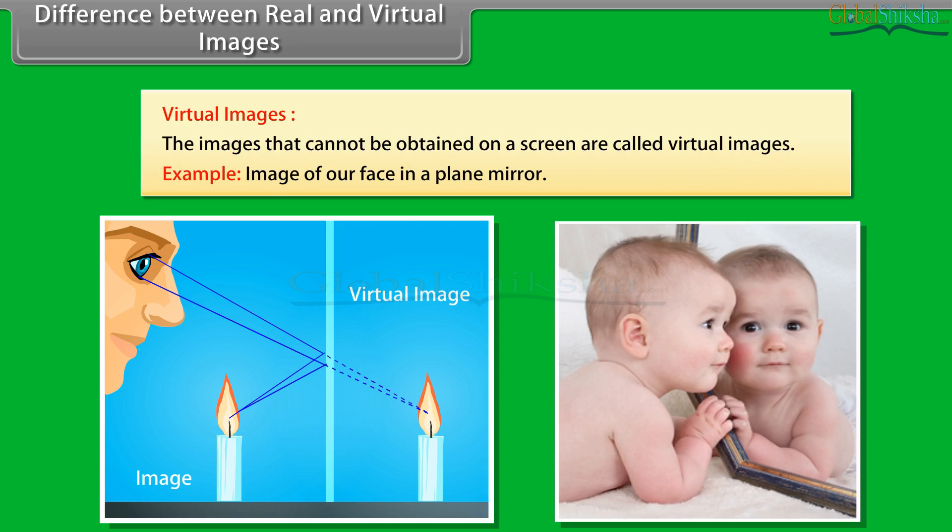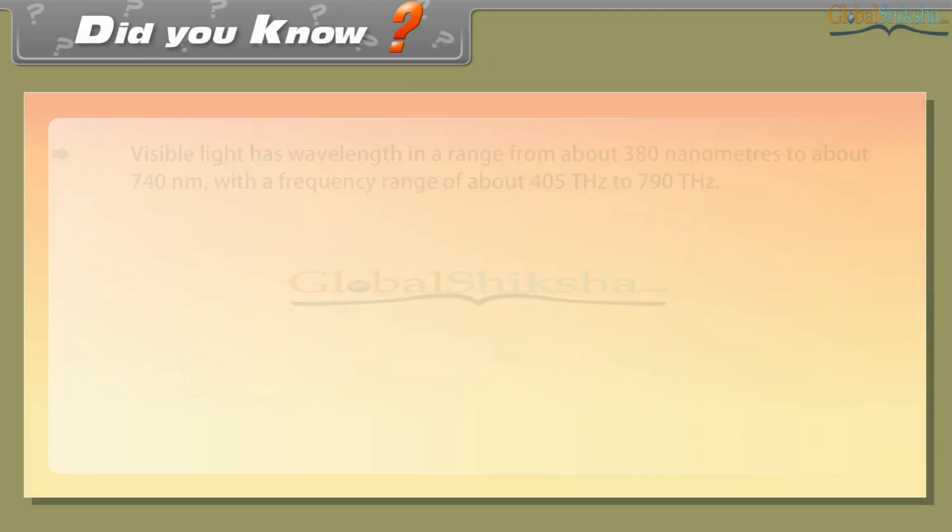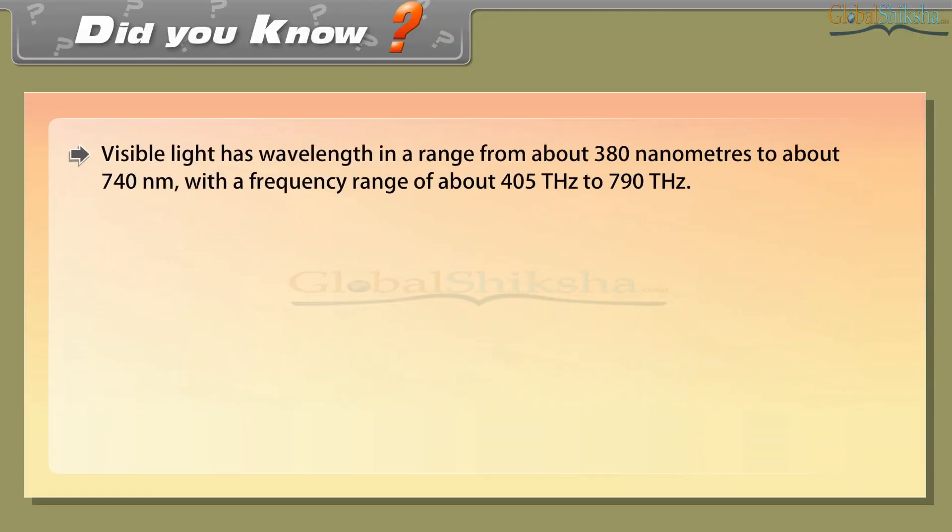Did you know: Visible light has wavelength in a range from about 380 nanometers to about 740 nanometers, with a frequency range of about 405 terahertz to 790 terahertz.